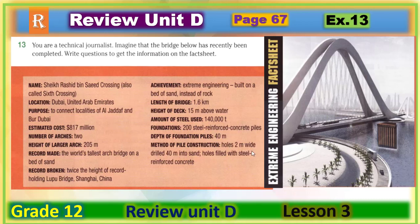Now please open your course book page 67, exercise 13. Let's have a look at this exercise. Can you look at the picture here? Do you know the name of this bridge in front of you? Great, where is it? It is in Dubai. You are a technical journalist. Imagine that the bridge below has recently been completed. Write questions to get the information on the fact sheet, the fact sheet here in front of you.